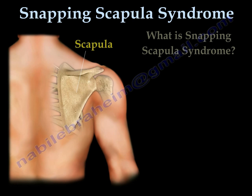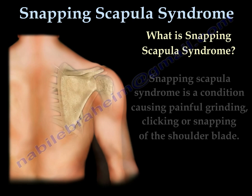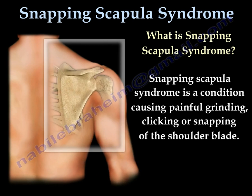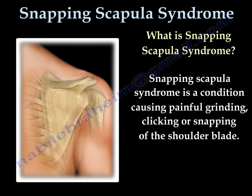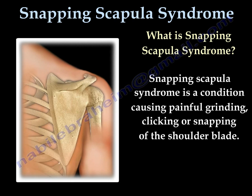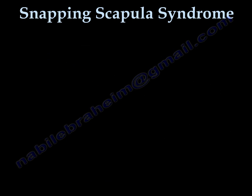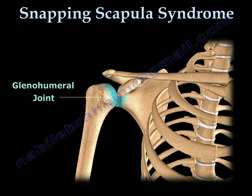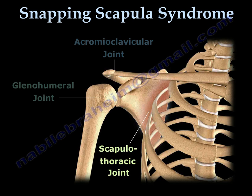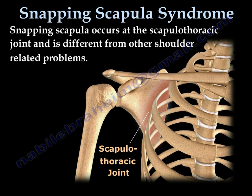Snapping scapula is a condition causing painful grinding, clicking, or snapping of the shoulder blade. The shoulder joint itself is called the glenohumeral joint. The shoulder separation occurs at the acromioclavicular joint, but the snapping scapula occurs at the scapulothoracic joint — it's a different joint. You can see the arrow pointing towards the scapulothoracic joint.